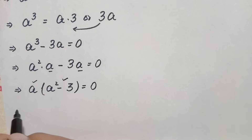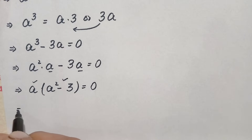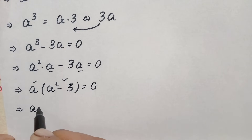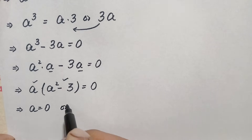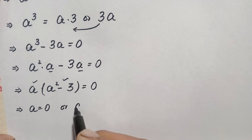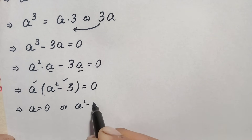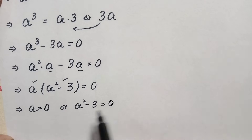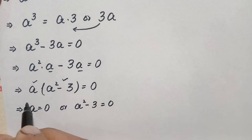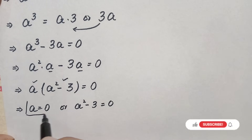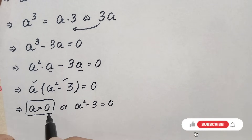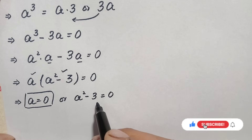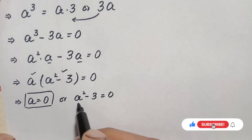This gives us two equations. The first equation is a squared minus 3 equals zero. The obvious first value is a₁ equals zero. Now we will solve the quadratic equation for the other two values of a.